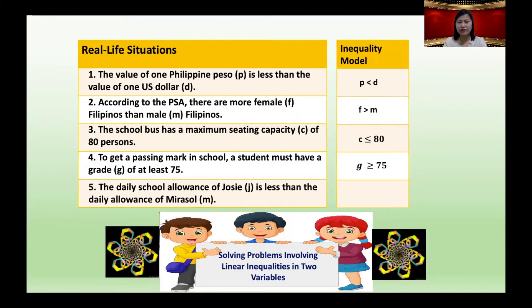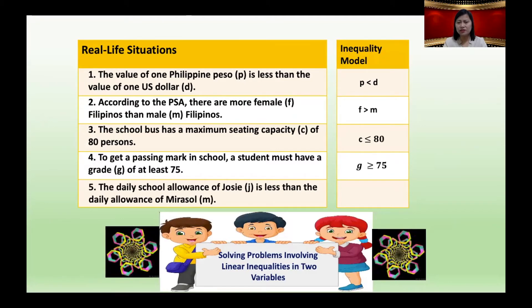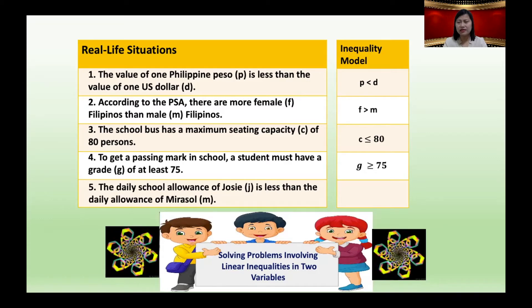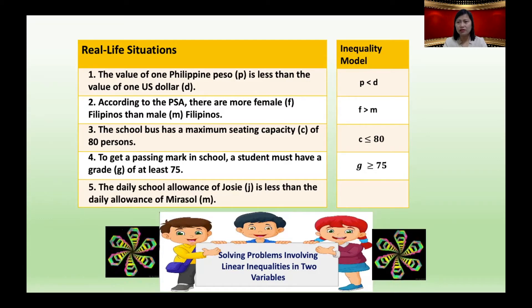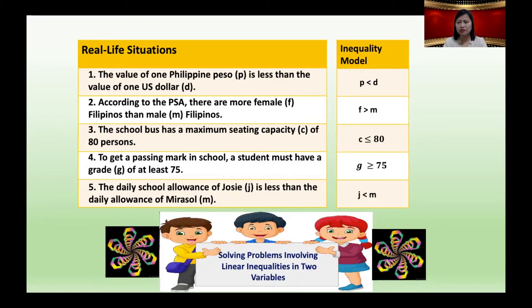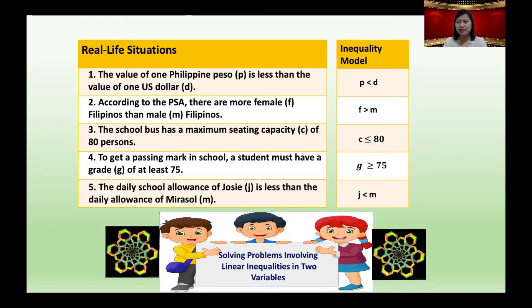And number five: the daily school allowance of Josie J is less than the daily allowance of Mirasol M. The inequality model: J is less than M. Mathematics is not always about equals. Sometimes we only know that something is greater or less than.